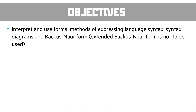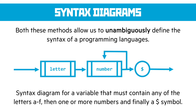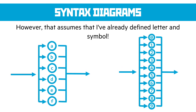To get that unambiguous syntax we use things like Backus-Naur form and syntax diagrams. Syntax diagrams are read from left to right and unambiguously define the syntax of a programming language. In this example we're defining a variable that has a single letter A to F, then one or more numbers, and finally a dollar symbol. The box labeled 'letter' means there's another definition for it elsewhere. The arrow either goes on to the dollar symbol or loops back to the number, so you need one or more numbers, then the dollar symbol. Syntax diagrams make recursion or iteration upon any element quite simple to define.